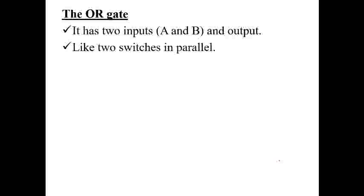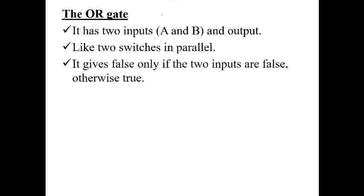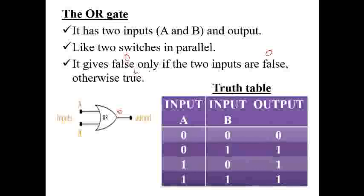The fourth gate is the OR gate. It has two inputs and one output, like two switches in parallel. It gives false (0) only if both inputs are 0; otherwise the output is 1. That means if at least one of the two inputs is 1, the output is 1. The truth table: 0,0→0; 0,1→1; 1,0→1; 1,1→1.